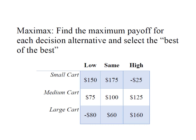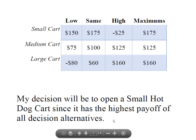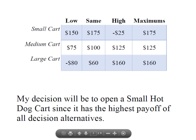This is a very optimistic approach to decision making. I've looked at my decision alternatives and identified the highest payoff for the small cart, the highest payoff for the medium cart, and the highest payoff for the large cart. My maximum payoffs are $175, $125, and $160. Based on a maxi max approach, my decision will be to open a small hot dog cart since it has the highest payoff of all my decision alternatives. So I'm looking at this from a very optimistic standpoint.